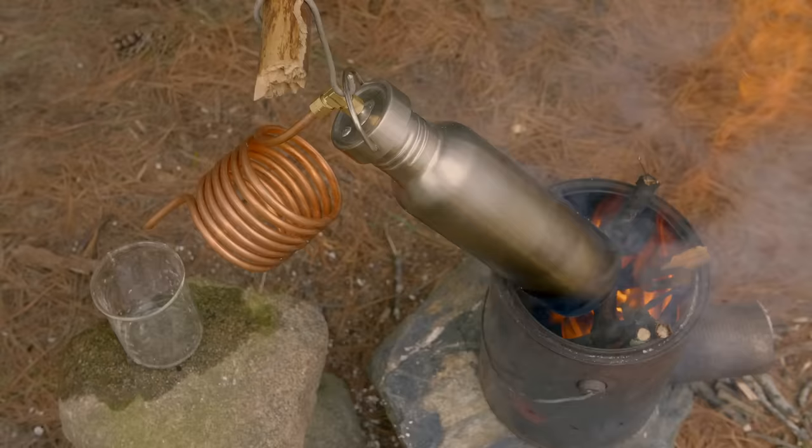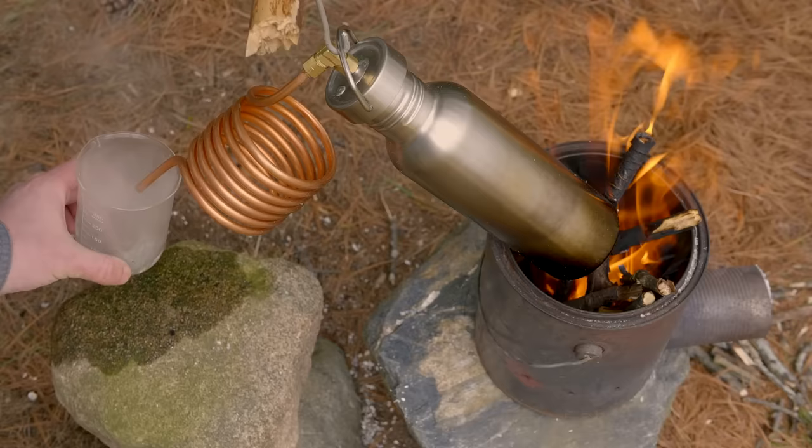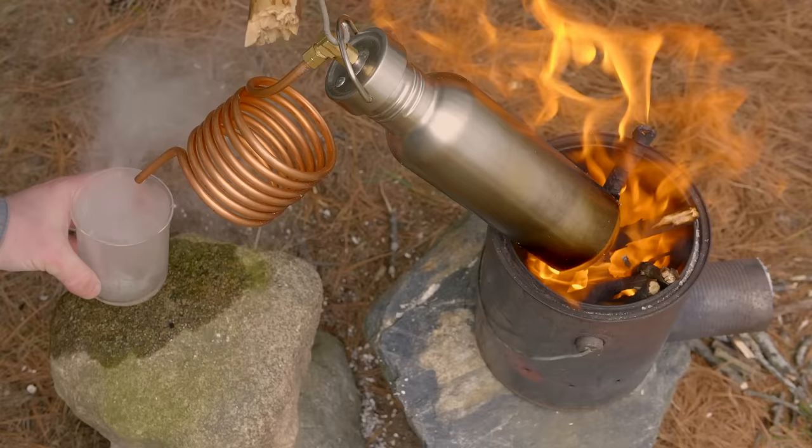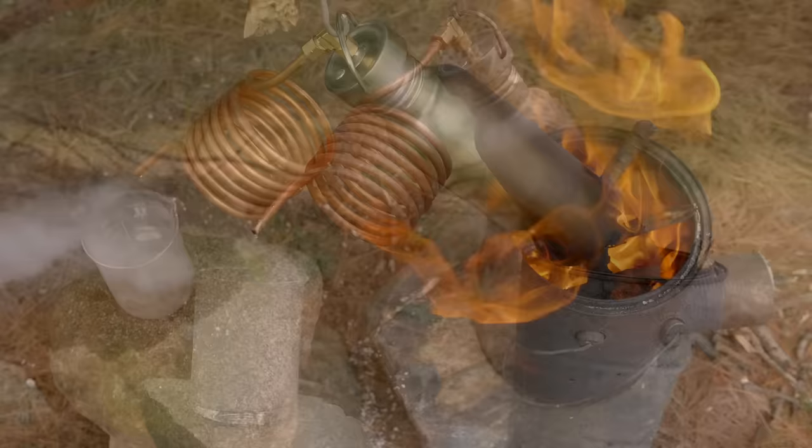This time the stove was actually so hot that the steam production outpaced the rate that the coil could cool it back down into water. We can see drips forming, but also quite a bit of steam exiting the tubing. This is wasteful, so we need to cool the tubing down until we're only seeing liquid water coming from the end.